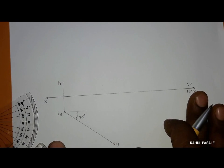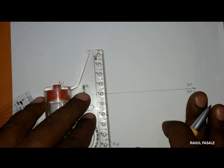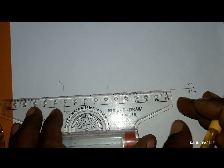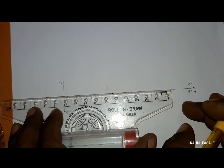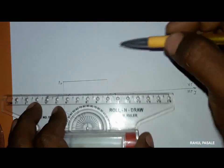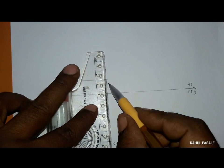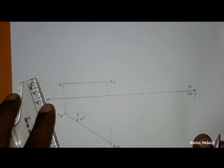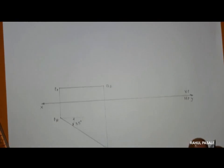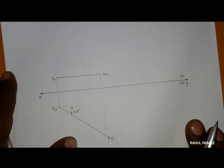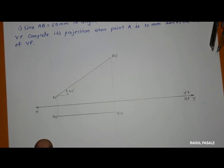As this line is parallel to HP, point PF will project as a horizontal line parallel to the XY line. We take the projection of QH and draw a horizontal line through PF parallel to the XY line. At the intersection we get point QF. This is the solution for this problem. Since this line is parallel to HP it is known as a horizontal line, and the earlier line which was parallel to VP is known as a frontal line.